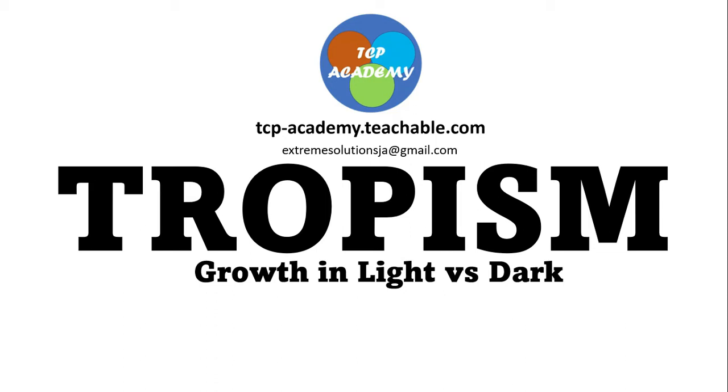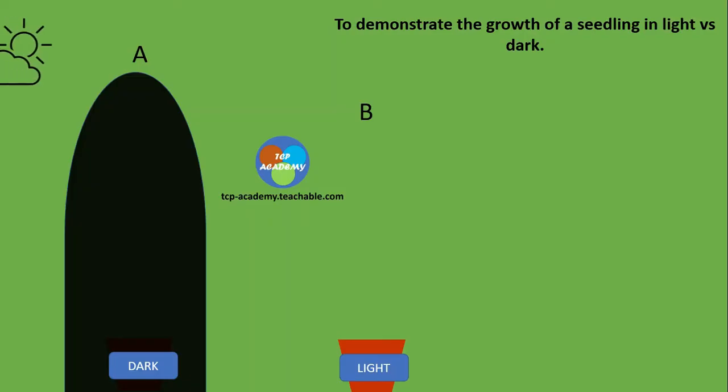Let's hop right into the experiment. In A, the plant is exposed to a total dark condition. In B, it is exposed to light.